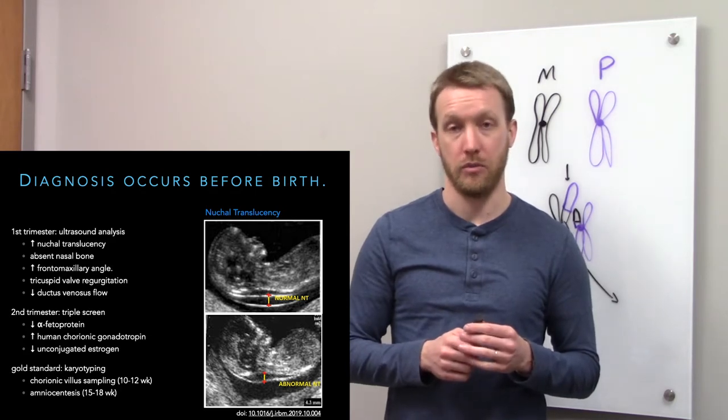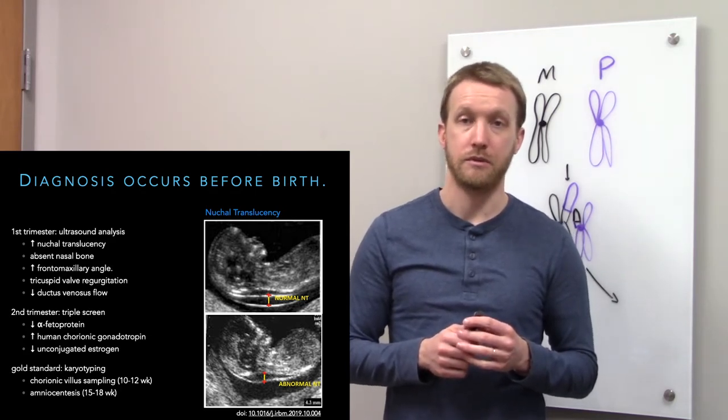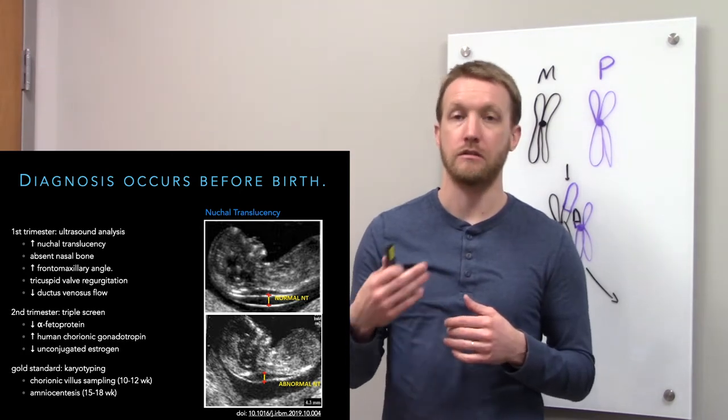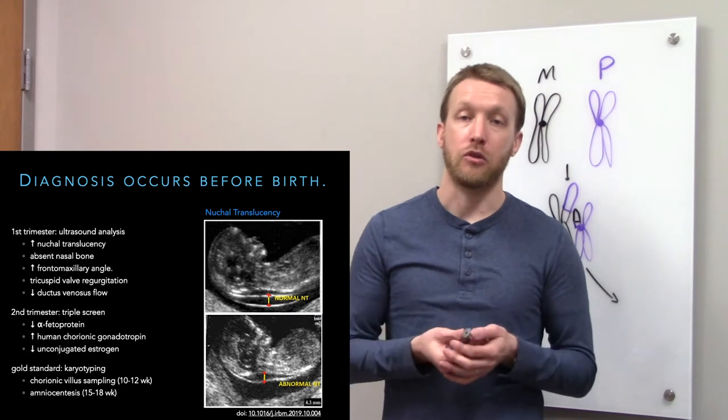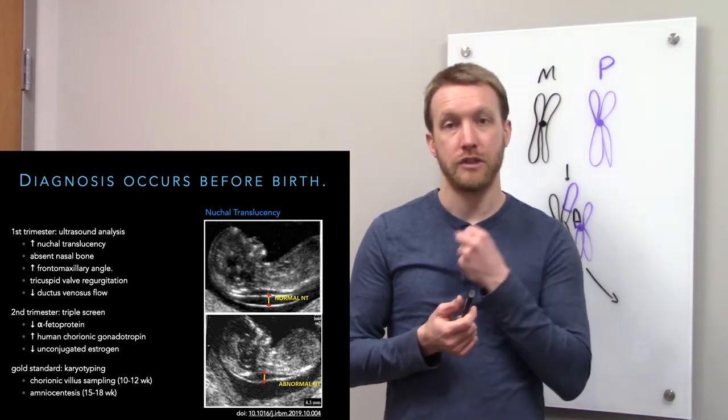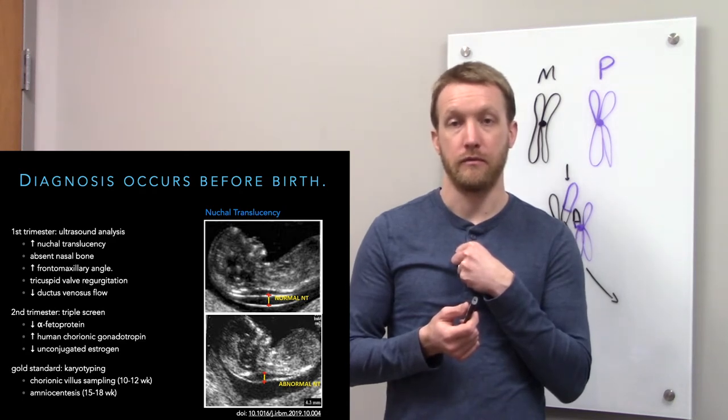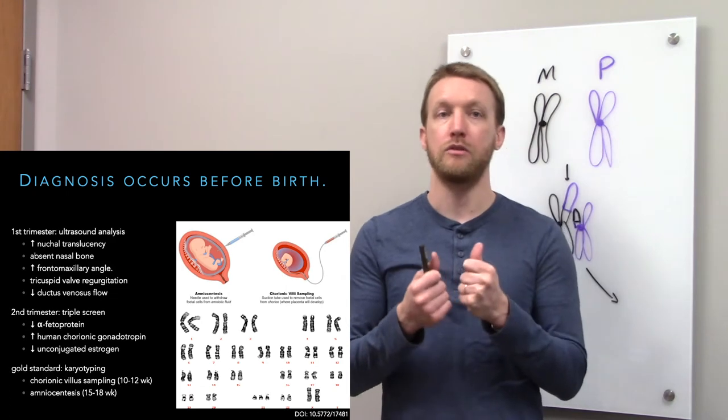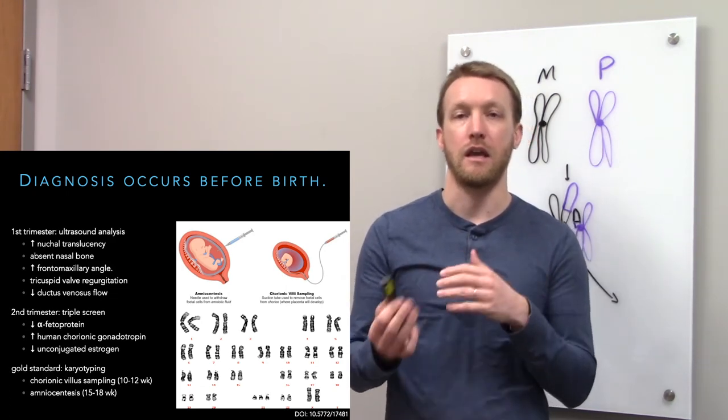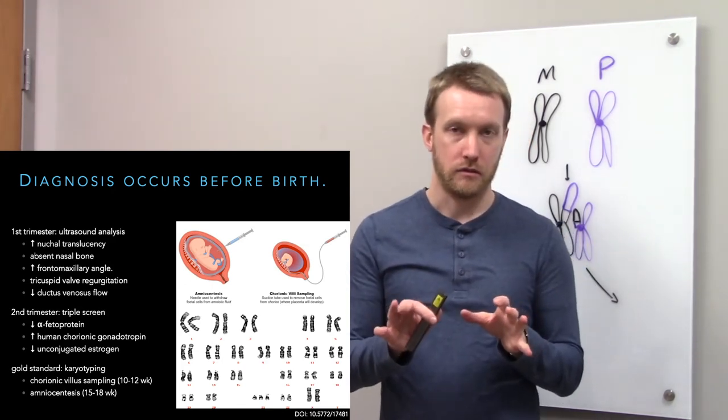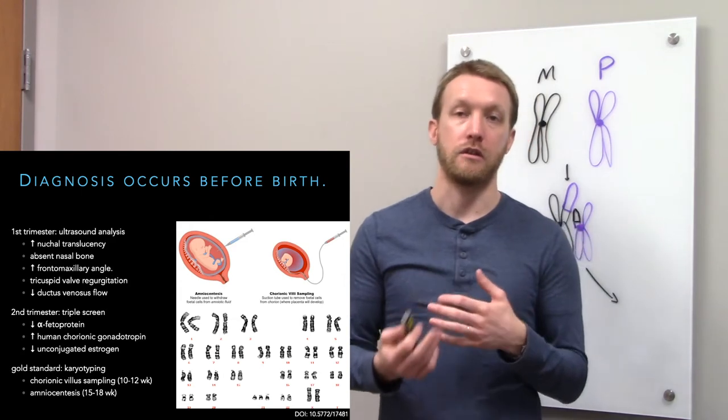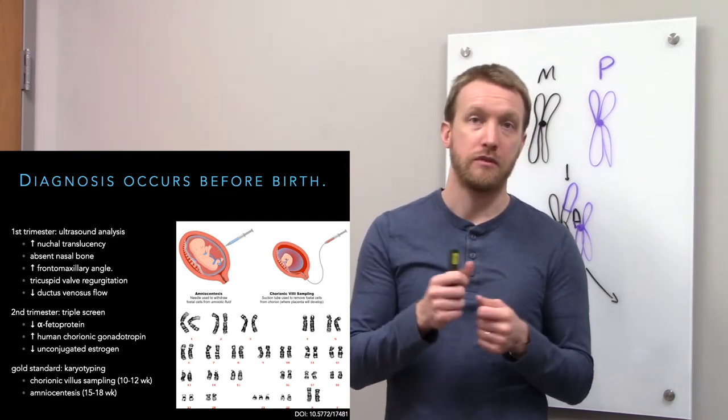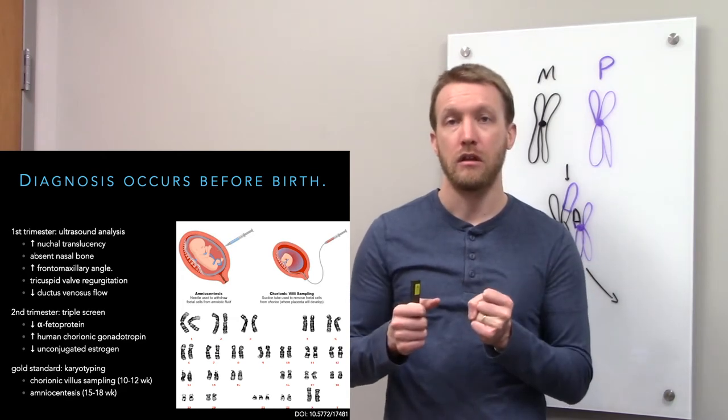The gold standard is to actually karyotype. Karyotyping is where we take out the chromosomes when they're condensed as the cell is going through the cell cycle, and actually just take account of how many chromosomes are there. This requires that we pull out genetic material from the child. We can do this by chorionic villus sampling or amniocentesis. These are not without risk. There's risk of infection and risk of damaging the developing fetus as well.